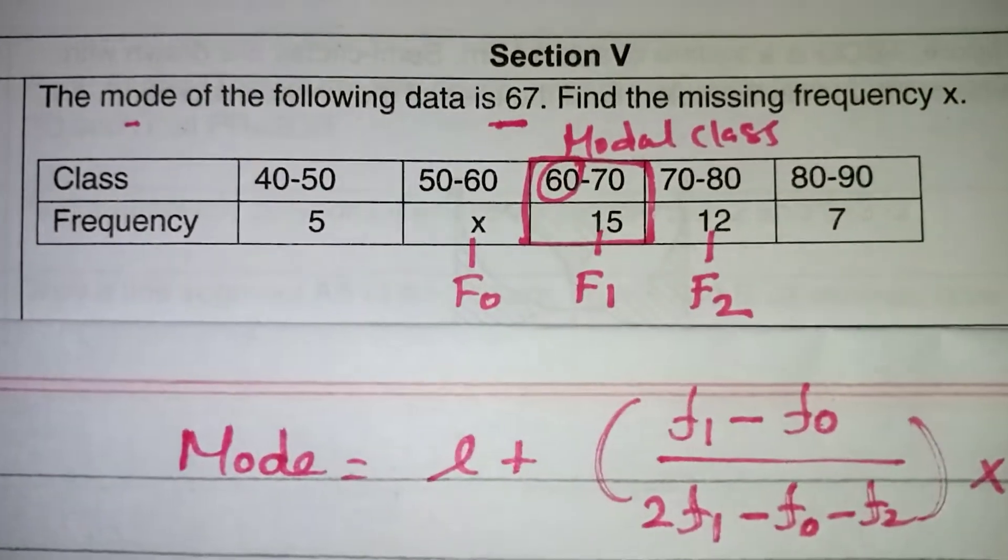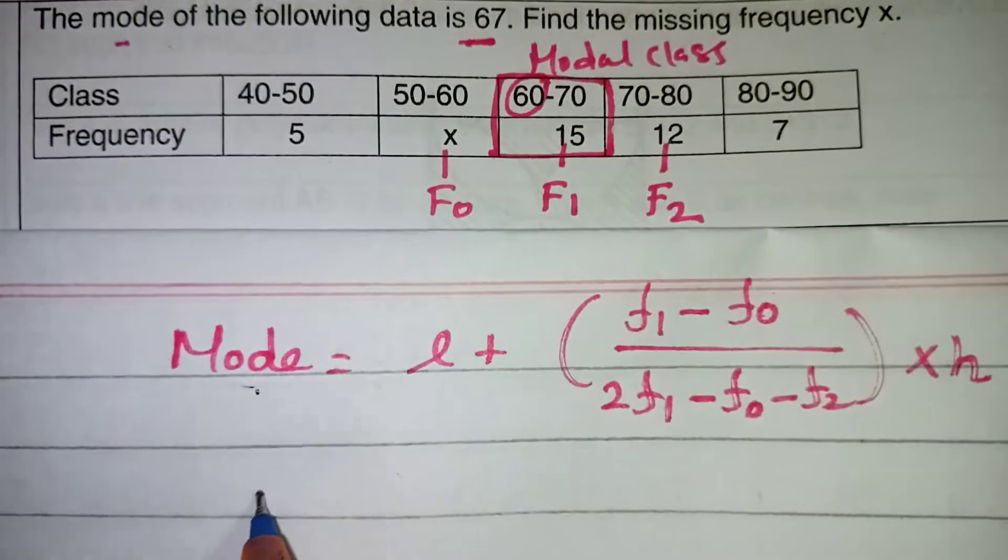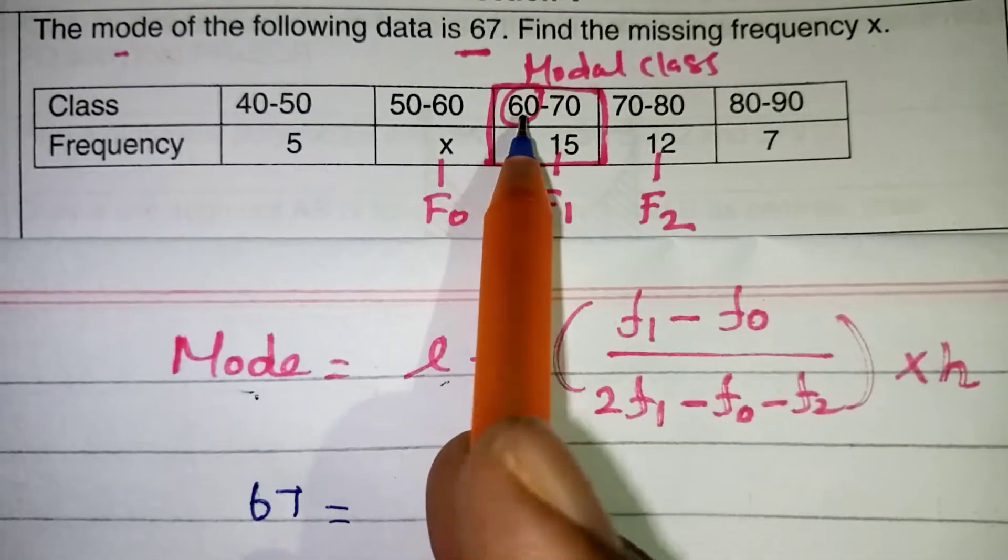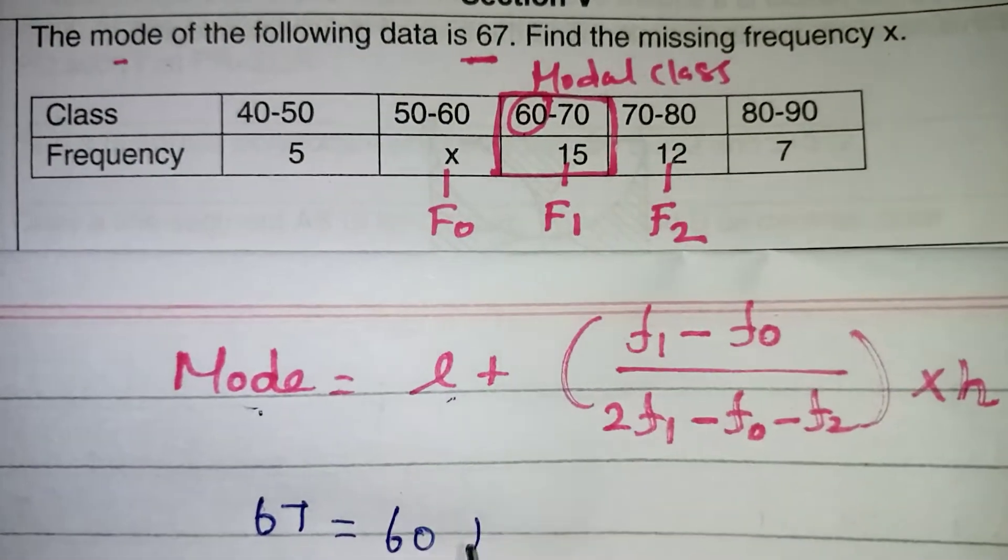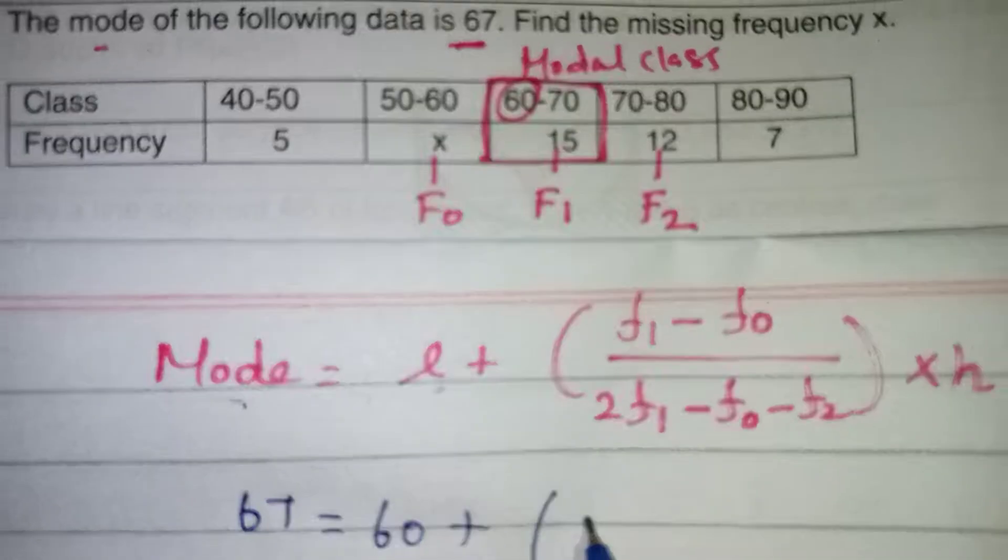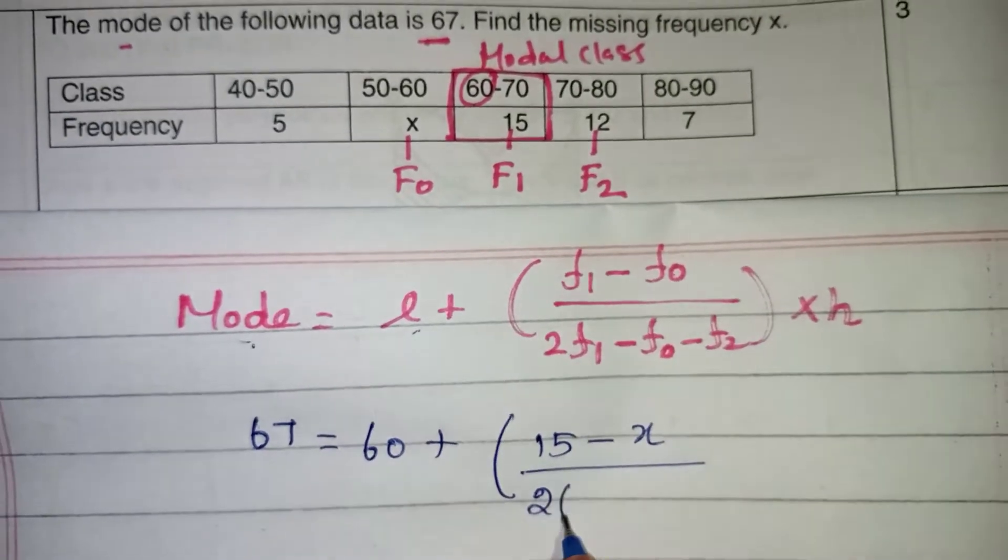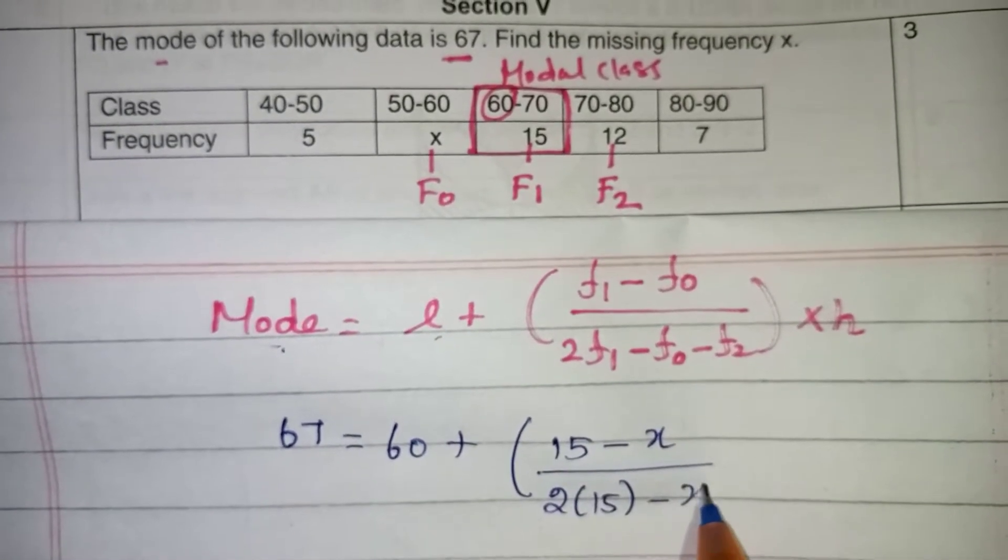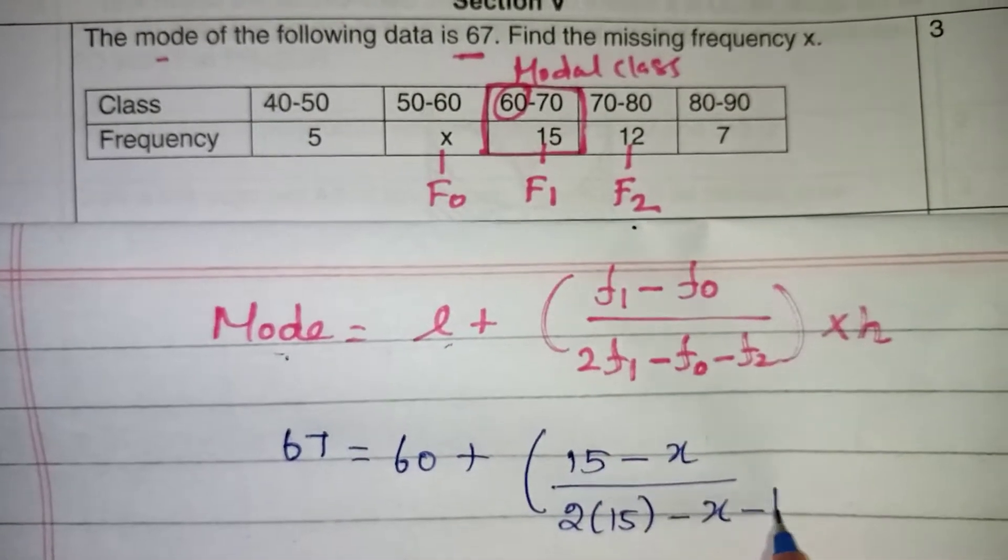Now let's apply the value from the table. Now mode value is already given as 67. So 67 is equal to L value 60, that is a lower limit of the modal class. So take the 60 here plus F1 value 15 minus F0 value X divided by 2 times F1. So 2 times 15 minus F0 is X again. F2 is 12 in this table. So this is 12.